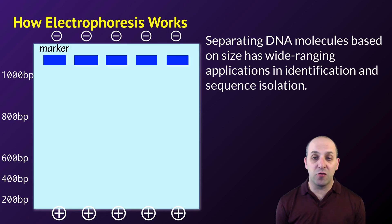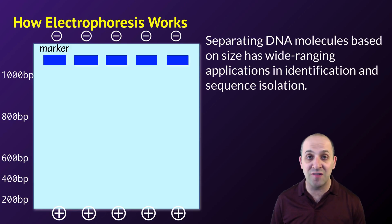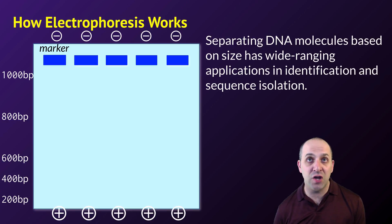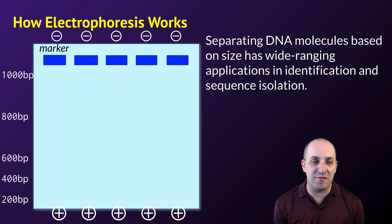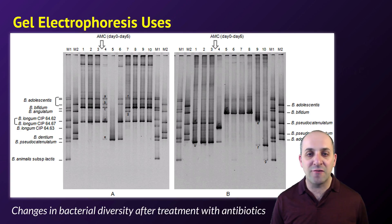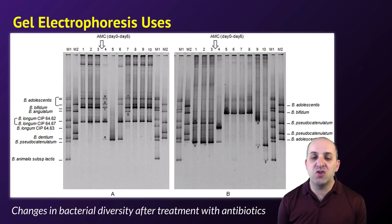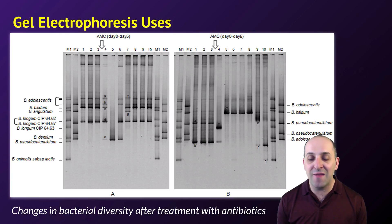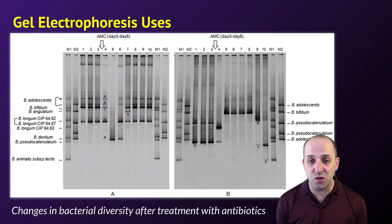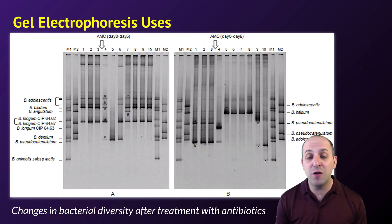Just like restriction enzymes, separating out DNA molecules based on their size has a lot of different applications in genetic engineering. If we want to isolate a fragment of a specific size, running a solution on the gel helps separate out those sized fragments from the rest. Gel electrophoresis is also widely used in identification based on DNA sequences. In this experiment, intestinal bacteria was isolated before and after treatment with antibiotics on day five. Looking at the gel pattern for individual B, you can see that antibiotic treatment had a major effect on the types of bacteria present in their intestines — demonstrating how gels can be very useful for identification by correlating fragment sizes to individual organisms.